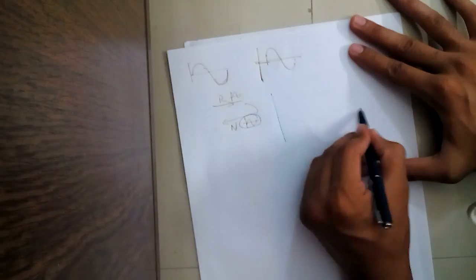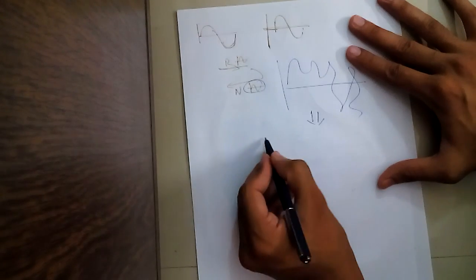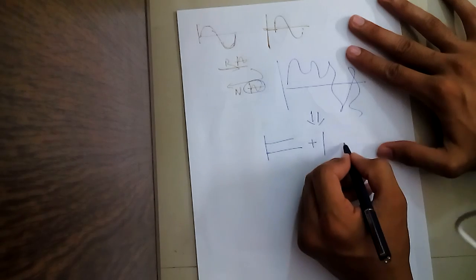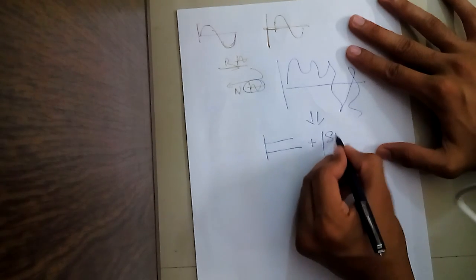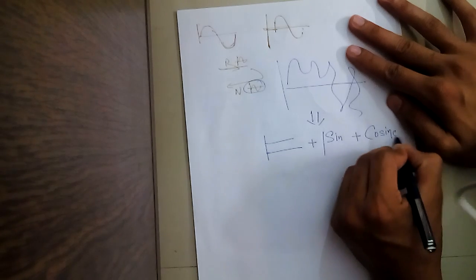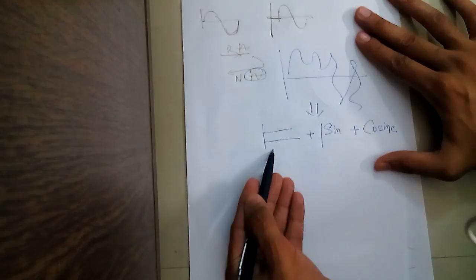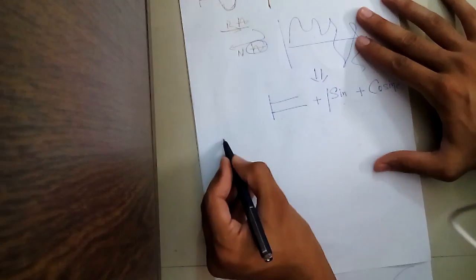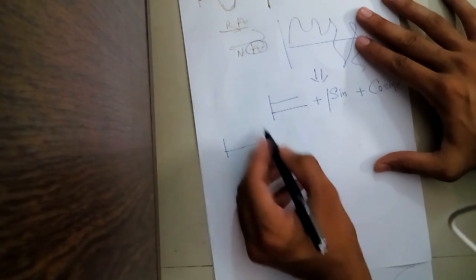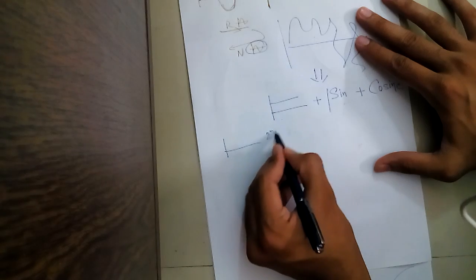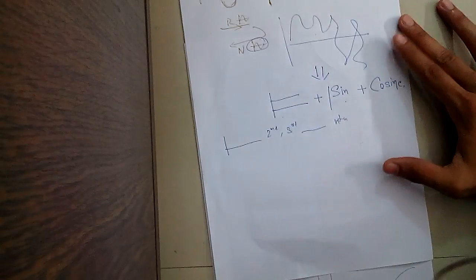And what did Mr. Fourier say? Mr. Fourier said: you give me any kind of waveform, and I will convert it into the summation of one DC waveform plus sinusoid sine and cosine components. So ultimately in the final waveform we will find that if I am getting a fundamental input, my output waveform will contain the second harmonic, third harmonic, and harmonics up to nth. So the basic cause of harmonics is nonlinear loads.